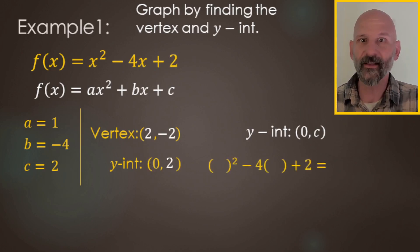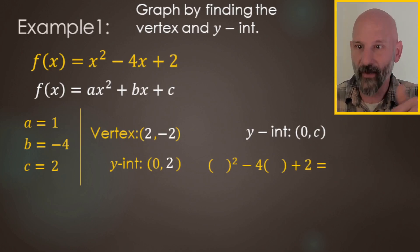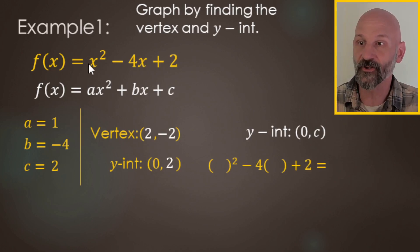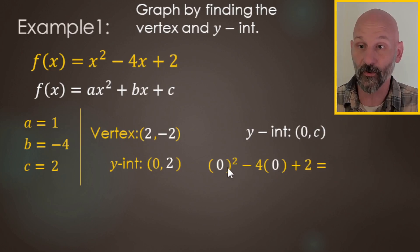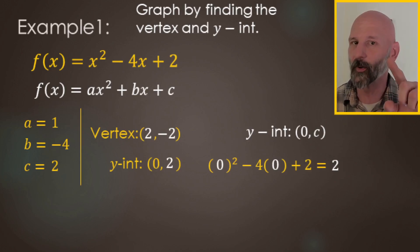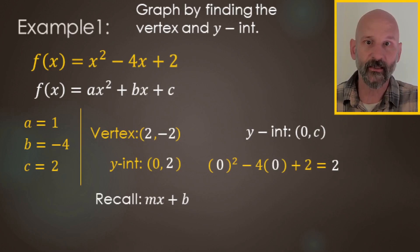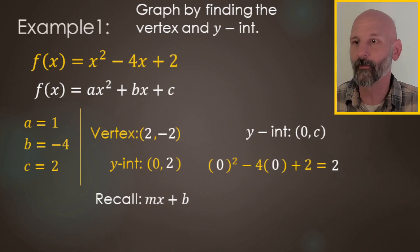Why is the y-intercept just c? On the y-intercept, x equals 0. So you plug 0 in for x: 0² − 4(0) + 2 = 0 − 0 + 2 = 2. It ends up being the constant term in general form. This is similar to slope-intercept form y = mx + b, where b was also your y-intercept constant term.